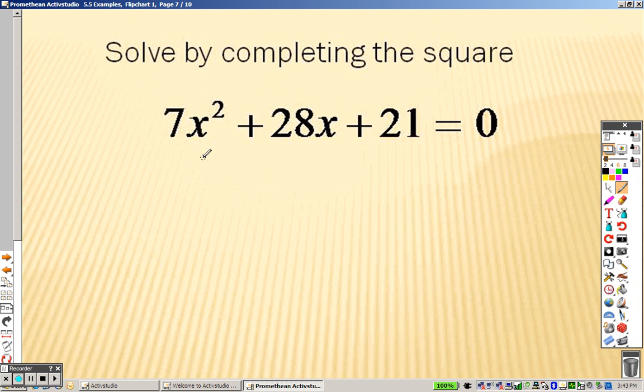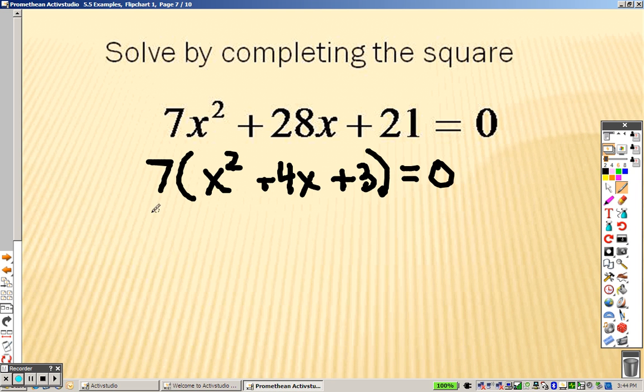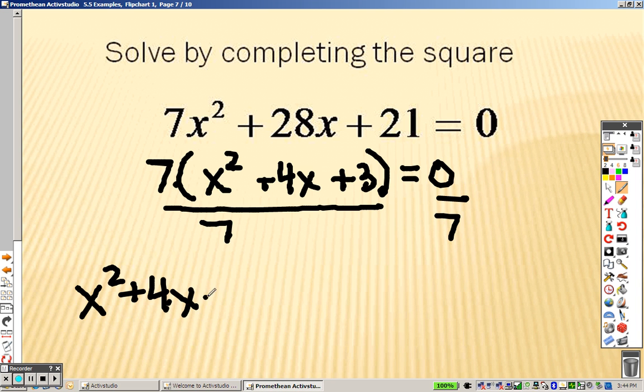Okay, so taking a look at this one, before you can complete the squares, you need to factor out whatever you can. Because you can't have a number in front of the x squared. So I'm going to pull out that 7. So we get an x squared plus 4x plus 3 equals 0. And look at it like this. If I wanted to 7 times all that junk so I could divide both sides by 7. Which actually means I get x squared plus 4x plus 3 equals 0.